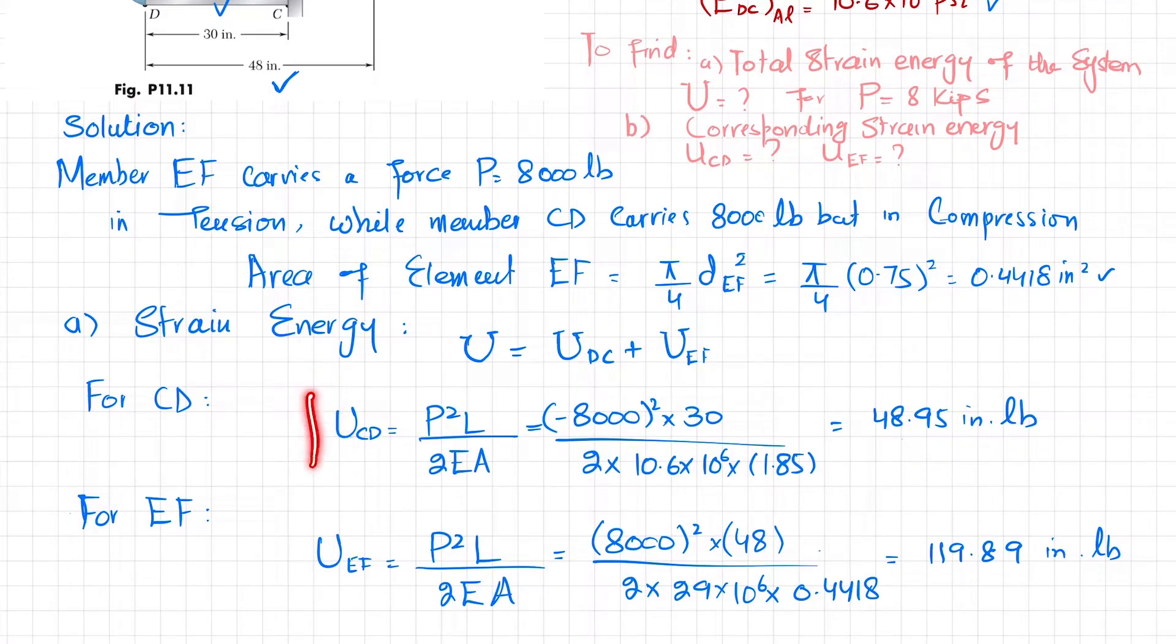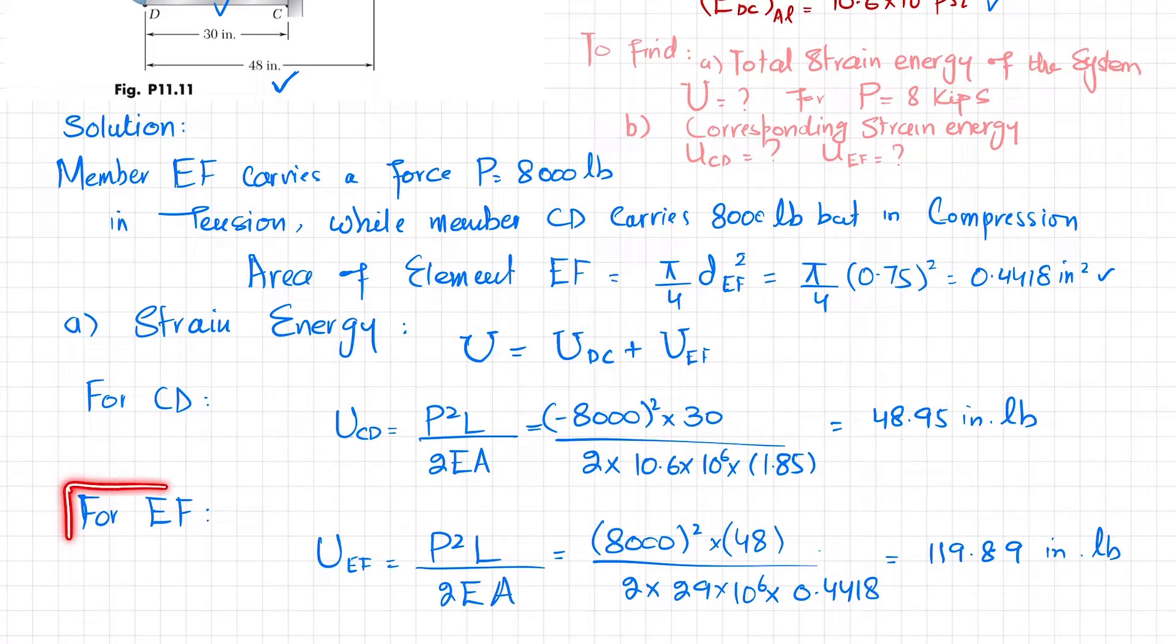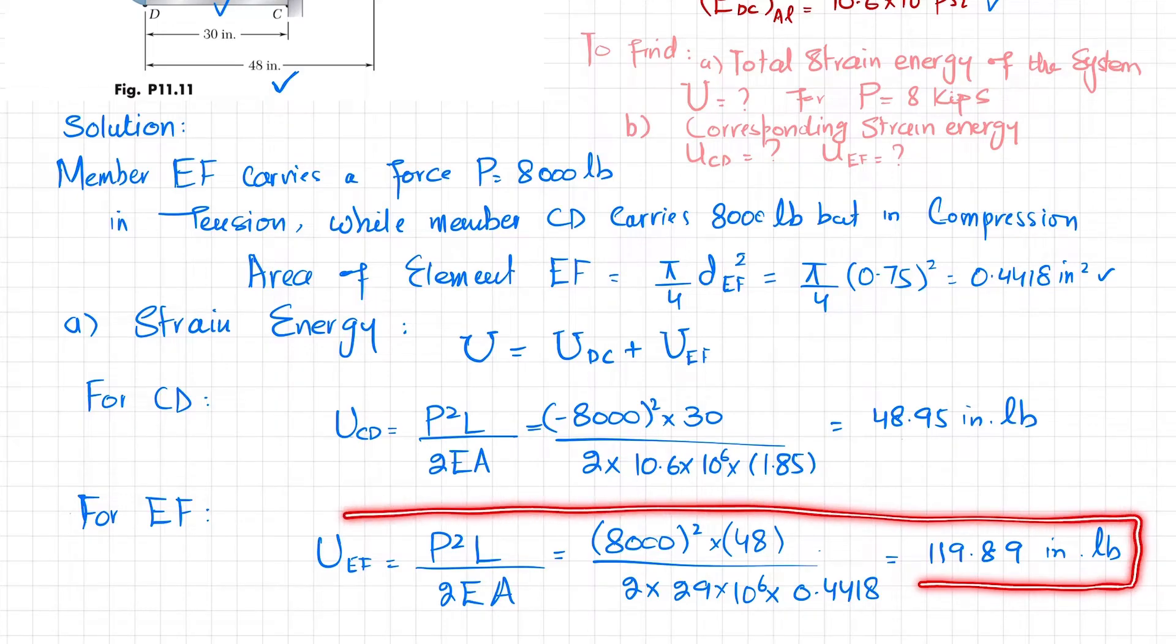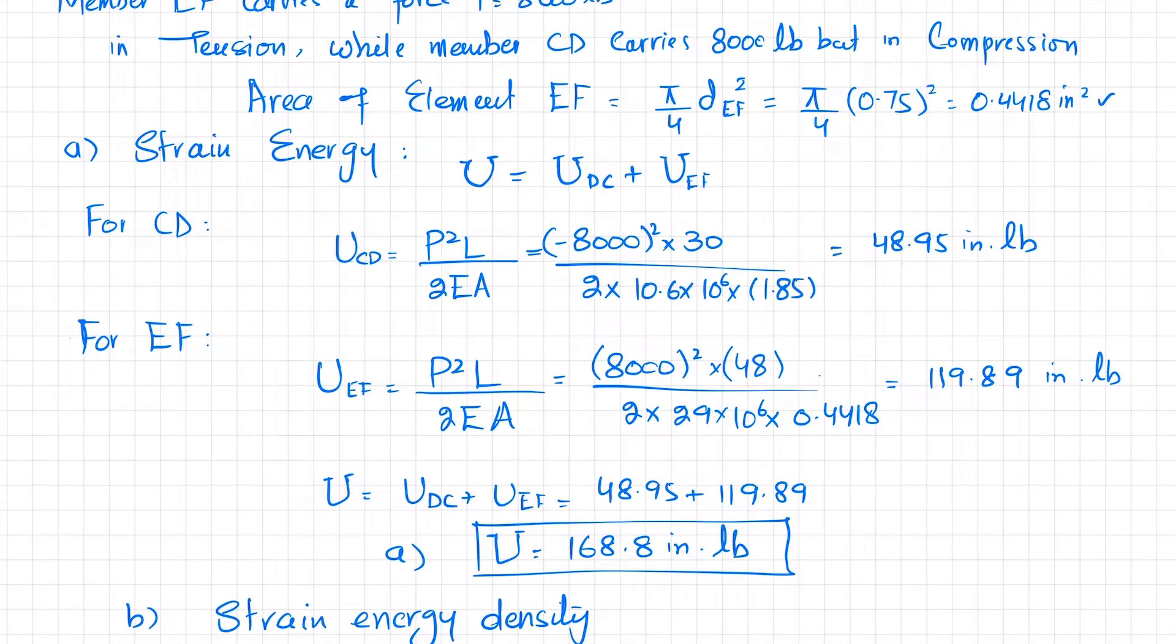For rod EF made of steel, U_EF uses the same formula. Here P is tensile, so 8000 squared times length, which is 48 inches, divided by 2 times E for steel, which is 29 × 10^6, times the area we calculated. When you put these values, the total strain energy in rod EF comes out to be 119.89 inch-pounds.